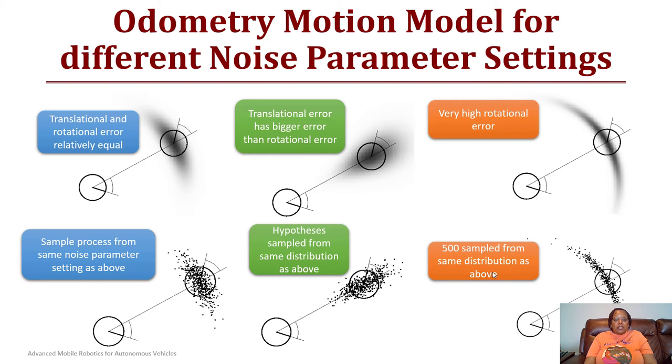For sampling the noise parameter set as above for the second one, we have more translational error than rotational error based upon the robot's initial and final value. You see that one is more elongated as shown in the middle two figures of the sample as well as the motion model.